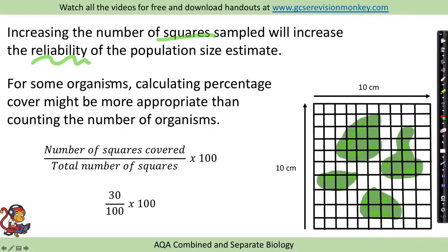For some organisms, calculating percentage cover might be more appropriate than counting the number of organisms. For example, you may have seen something like lichen growing on trees or walls.